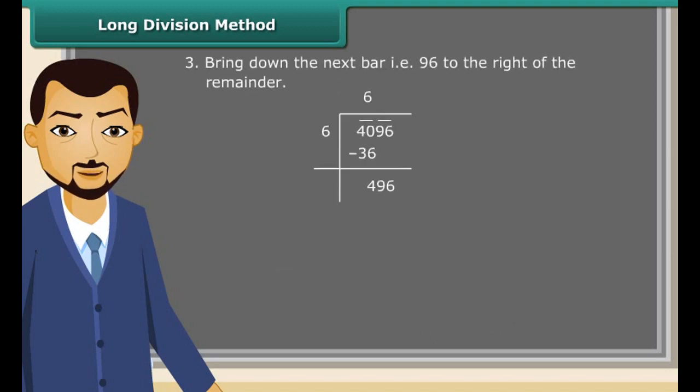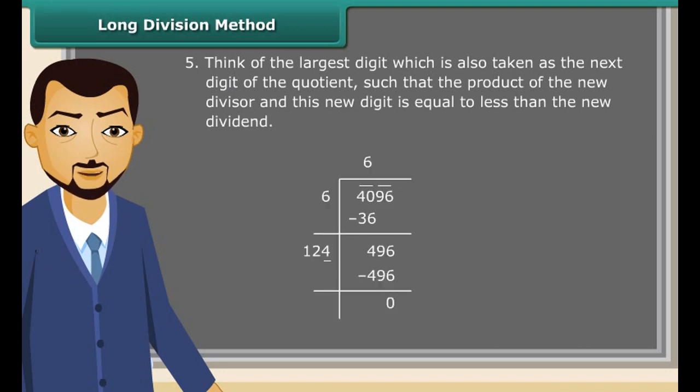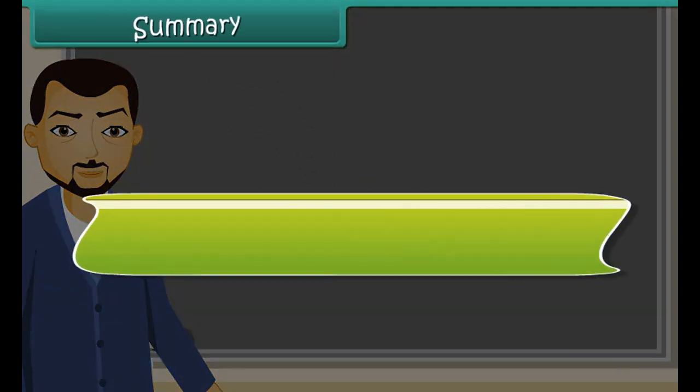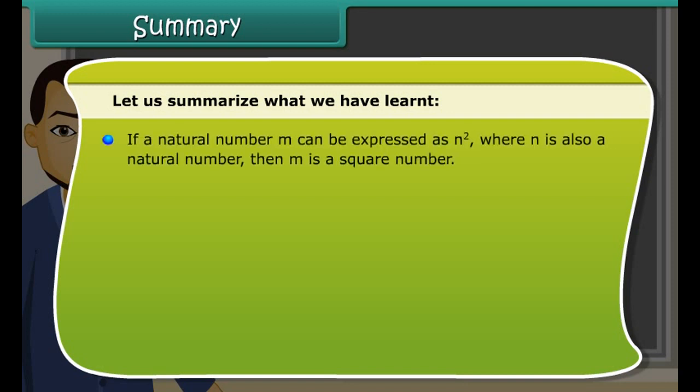Since 36 is less than 40, so we take 6 as the divisor and 6 as the quotient. Now, subtract 36 from 39. After that, bring down the next bar. That is 96 to the right of the remainder. Now, double the divisor. Next, think of the largest digit, which is also taken as the next digit of the quotient, such that the product of the new divisor and this new digit is equal to less than the new dividend. Here we have 124 multiplied by 4 equal to 496. Since the remainder is 0, so the square root of 4096 is 64.